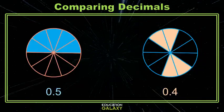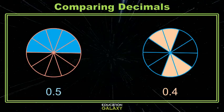Let's look at another. Here we have two fraction circles. They're the same size, and they're both separated into ten equal size pieces, and each piece represents one tenth. On the left, we have five pieces shaded. That's the decimal five tenths. And on the right, we have four pieces shaded. That's the decimal four tenths.